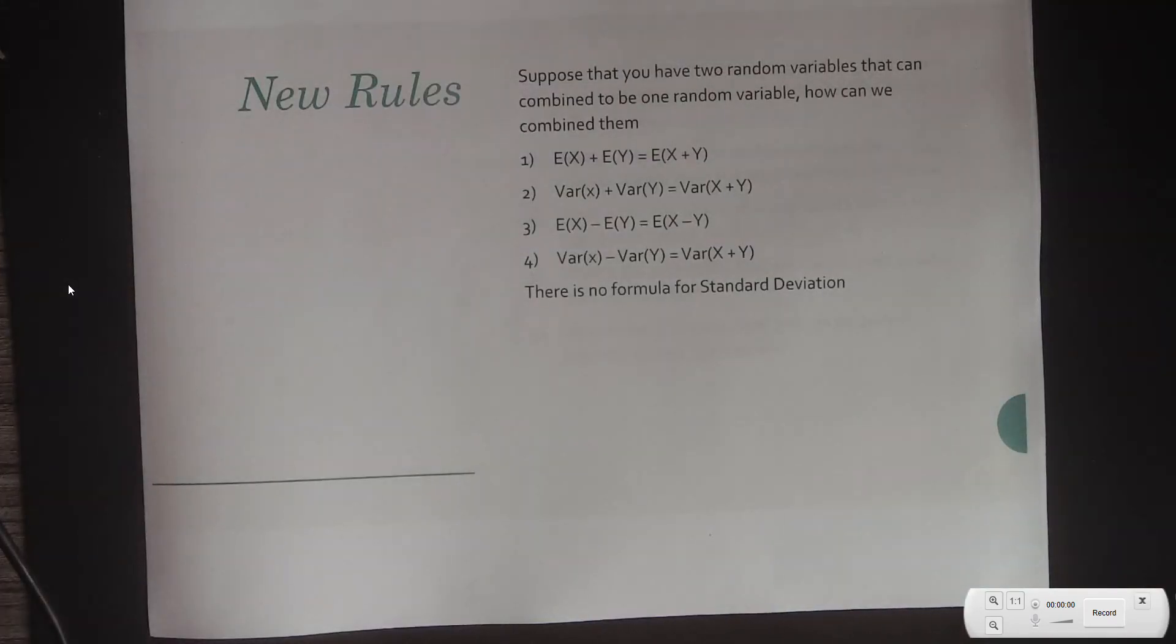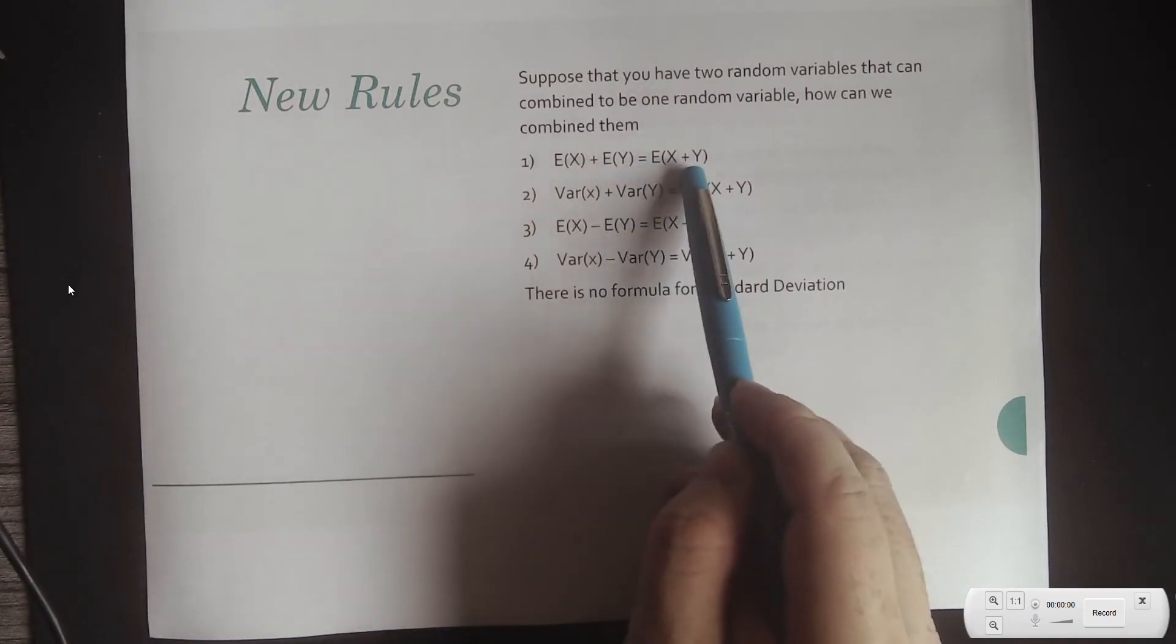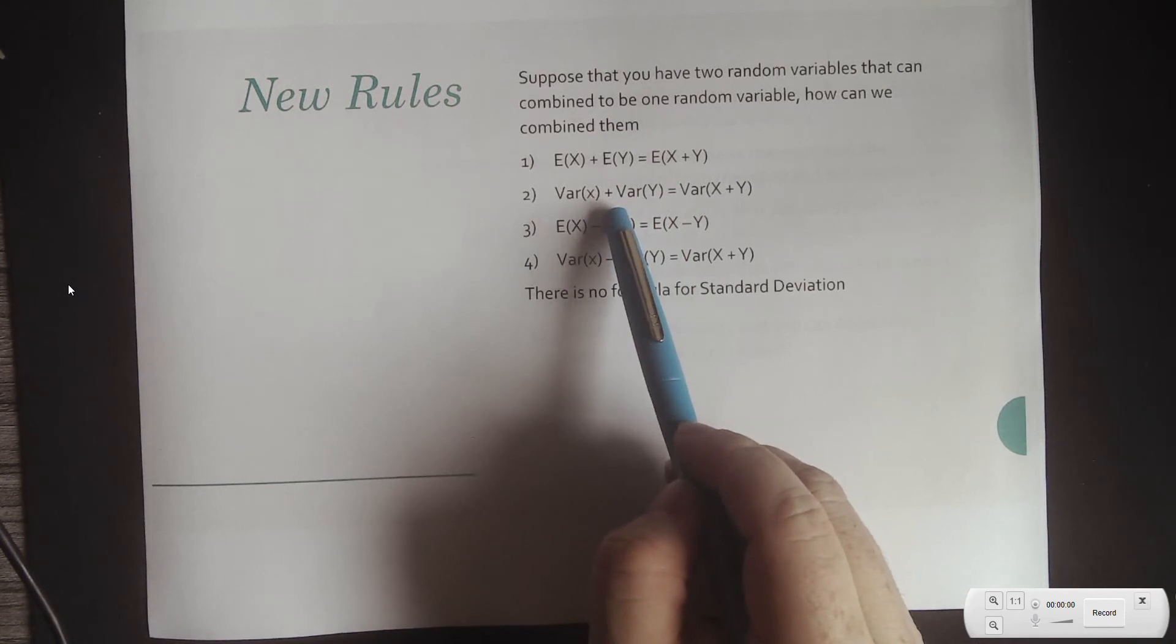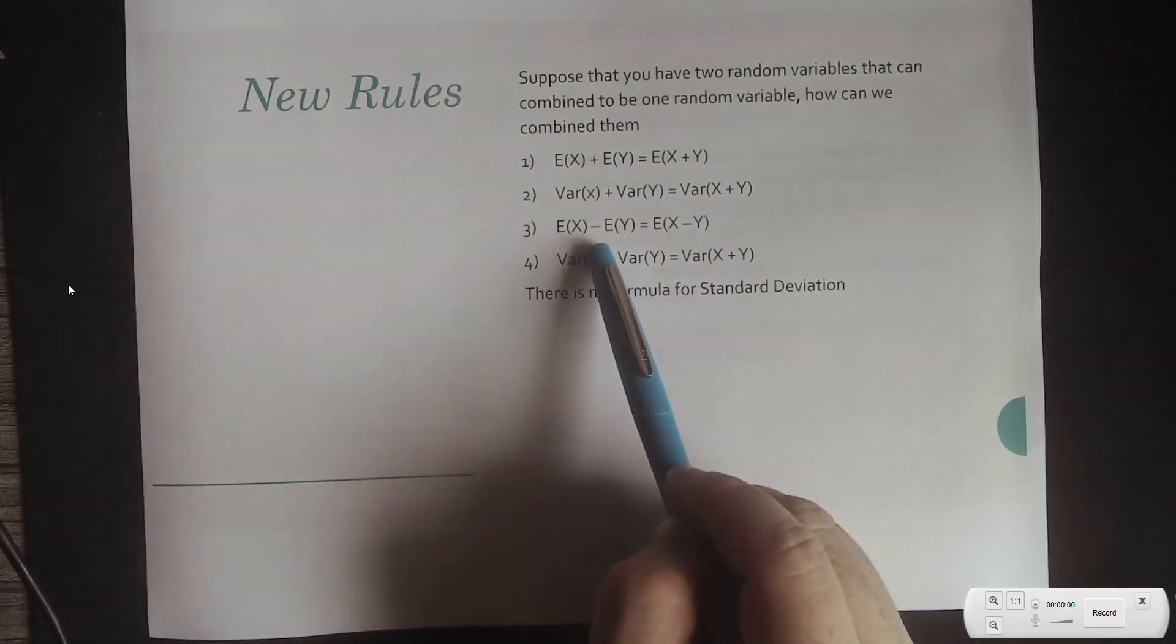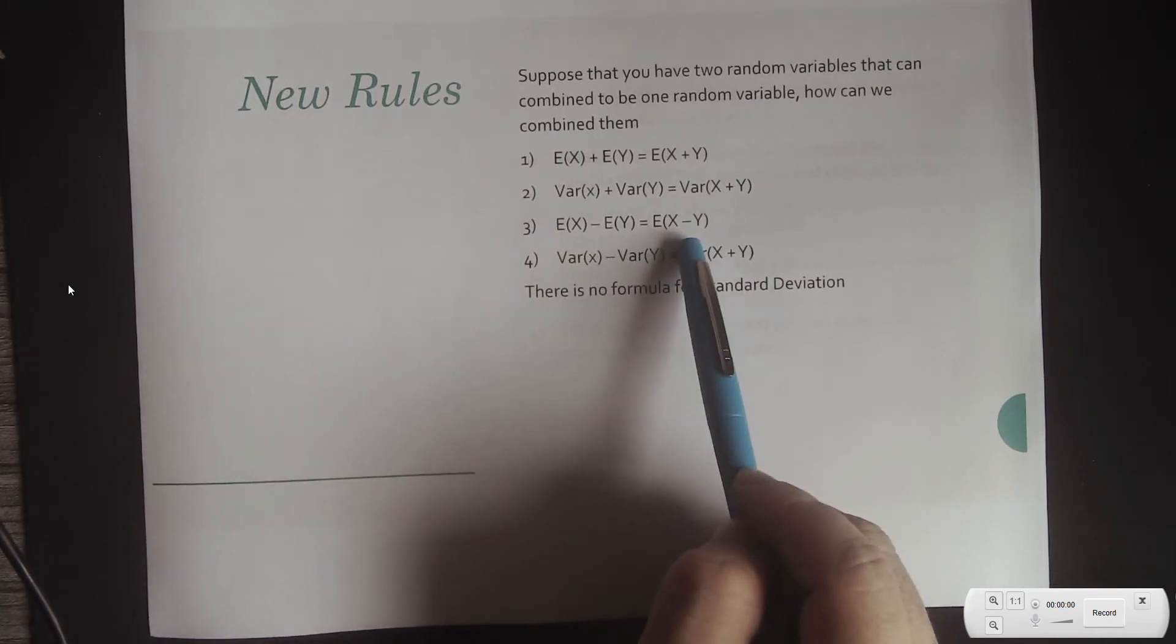So, a few new rules. Suppose that you have two random variables that can combine to be one random variable. How can we combine it? So, if we want to add the two expected variables, all we have to do is just physically add the two expected variables together. If I wanted to add the two variances together, again, all I have to do is add the two variances together. If I wanted to subtract the two expected values from each other, all I have to do is basically subtract the expected values.